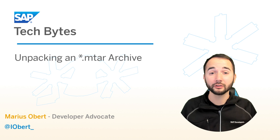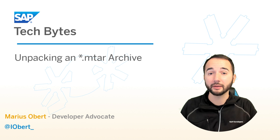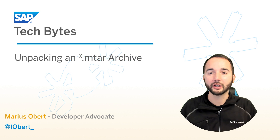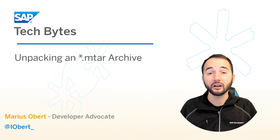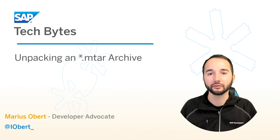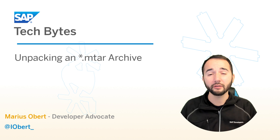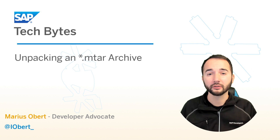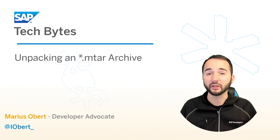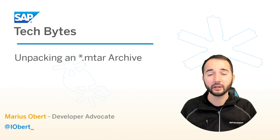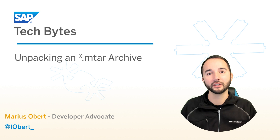When you are ready to deploy your multi-target application (MTA), make sure to run mbt build to create the MTA archive and deploy it with CF Deploy. But have you ever wondered what happens during the build process, what is inside this MTA archive, and what this file is in general? Then watch this video now.